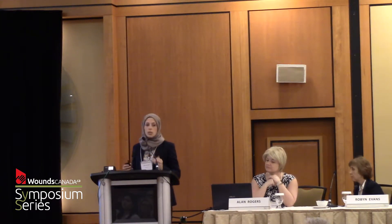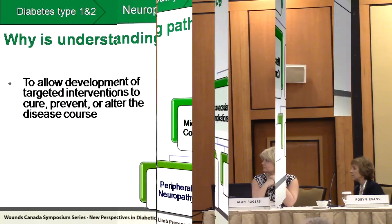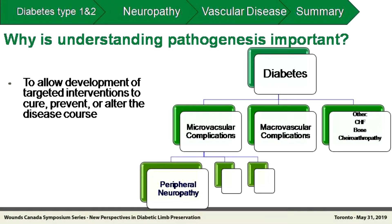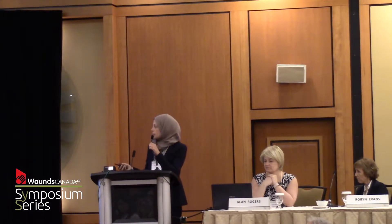Why is it important to understand pathogenesis of diabetes and diabetic foot disease? Diabetic foot disease sits within the bigger framework of diabetes as a systemic disease, and developing a targeted intervention just for diabetic foot disease in isolation is missing the big picture. We need to take them together and perhaps find common pathways — so one intervention already used for diabetes could also be evaluated for diabetic foot disease outcomes.